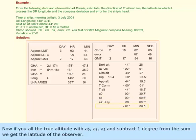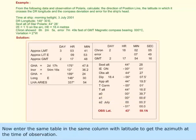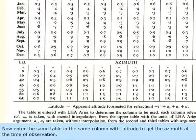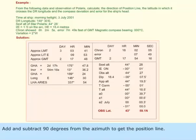Enter the same table in the same column with latitude to get the azimuth at the time of observation. Add and subtract 90 degrees from the azimuth to get the position line.